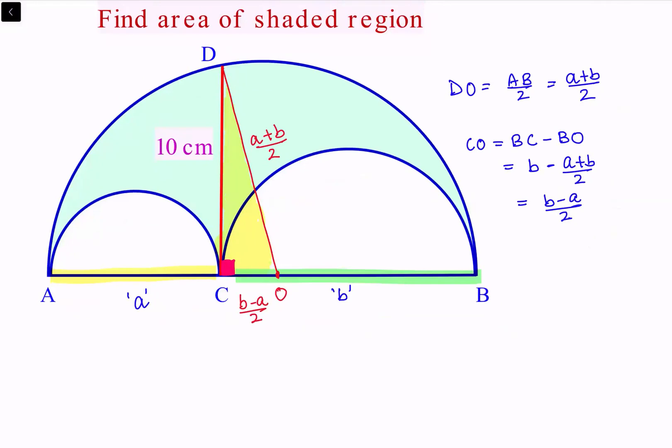Using Pythagoras theorem in triangle DCO, the hypotenuse squared DO² equals DC² plus CO². So ((A+B)/2)² = 10² + ((B-A)/2)². On simplifying, you will get the result that AB equals 100 units. Both A² and B² will cancel, and the remaining unit is A times B.